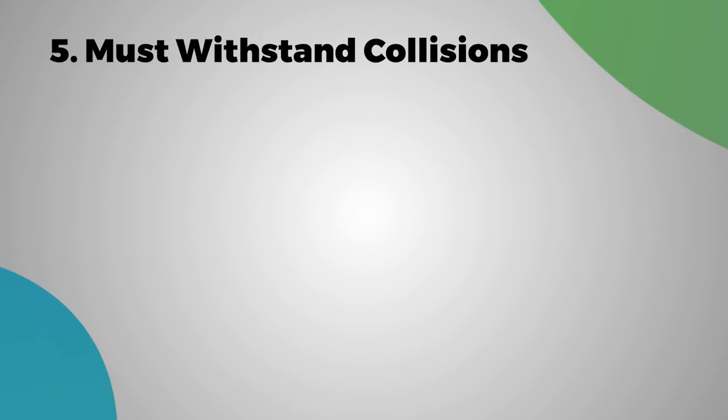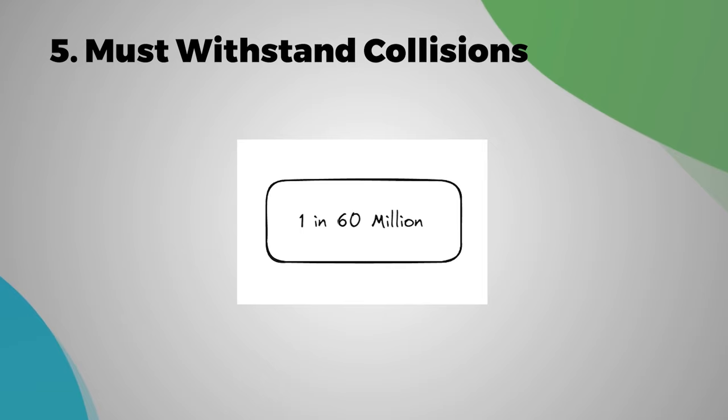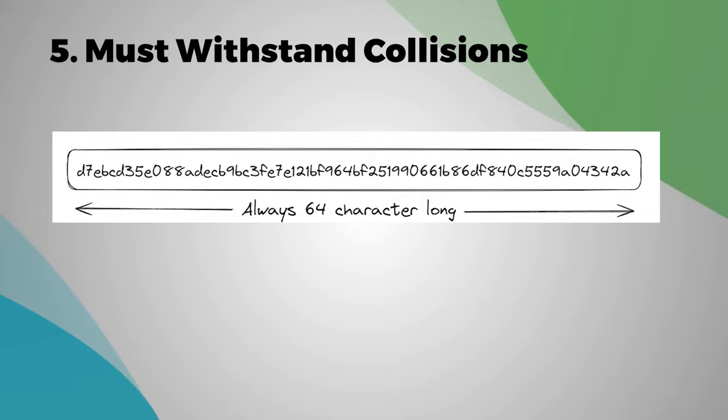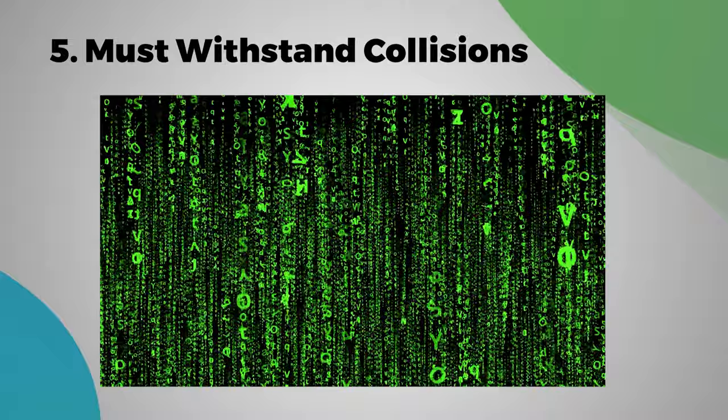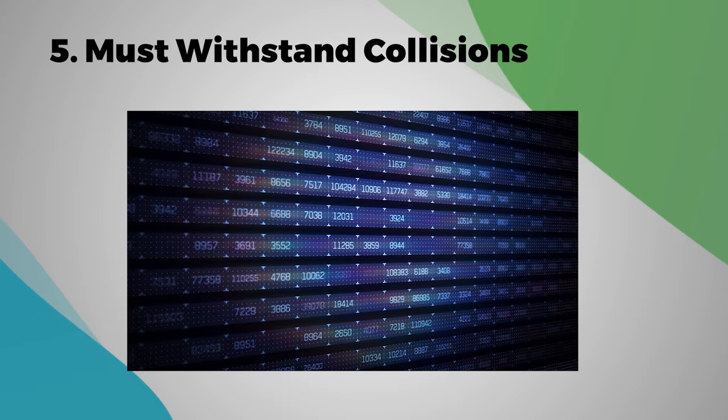Part five: it must withstand collisions. What does withstanding collisions mean? As we saw in the example of people, one in 60 million—you can have two people who have the same fingerprint. Same thing for the hashing algorithm. With the hash algorithm, as you can see, it's 64 bits, right? So it's very limited. Even though there's a lot of different variations that you can have, it's still limited—it's not infinite. And yet, the quantity of different digital documents that can be created is unlimited.